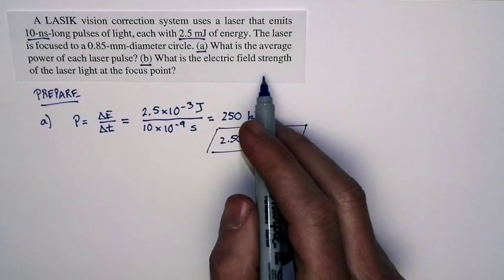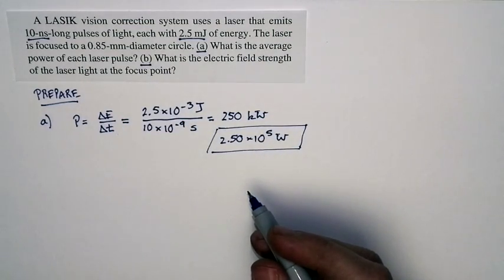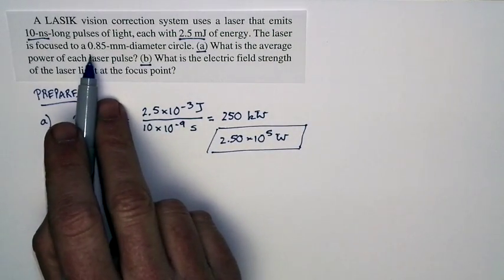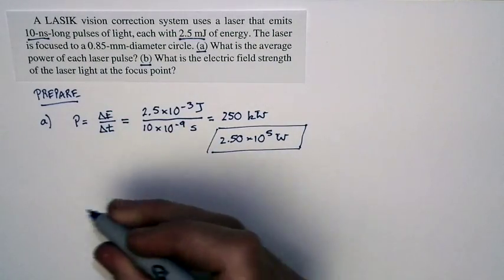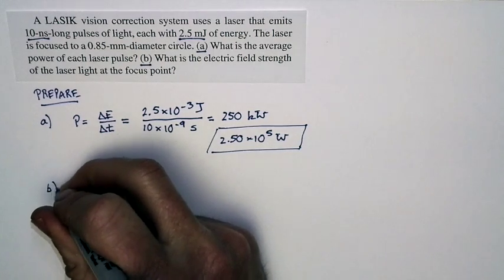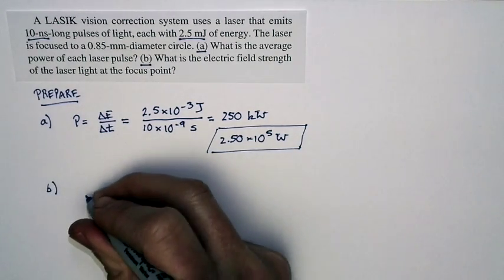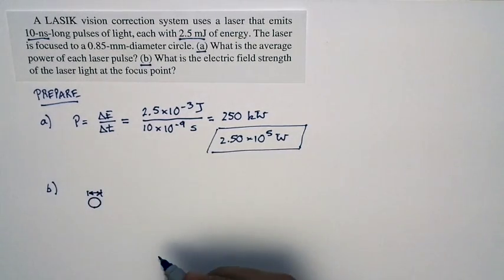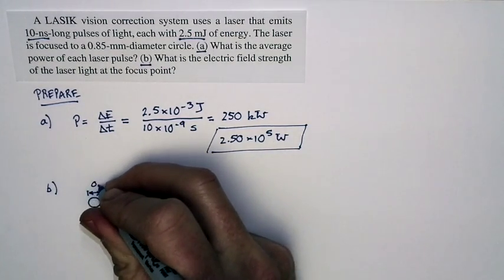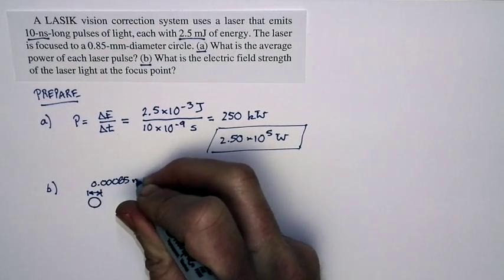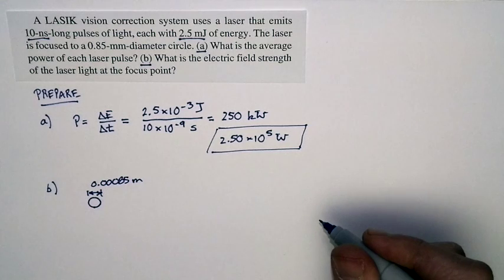What is the electric field strength of the laser light at the focus point? Now notice this: this power is focused into a tiny circle. Part B says all that laser light is focused into a tiny circle, 0.85 millimeters across. So 0.00085 meters in diameter. That's how big the circle is.